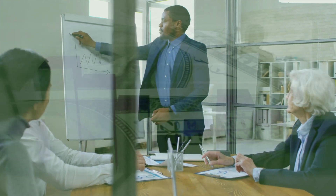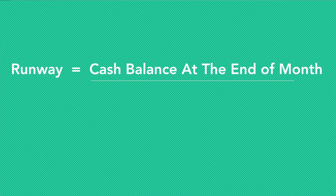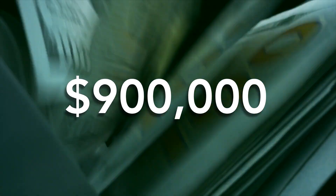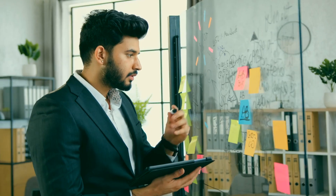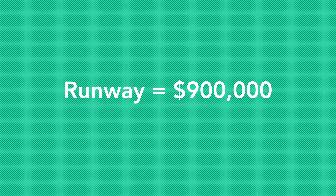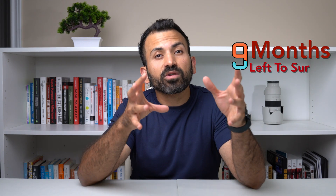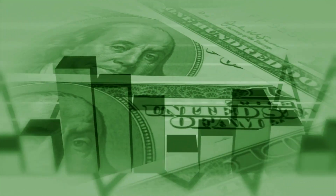Your runway is a calculation that tells you how many months your startup will survive until it needs another cash injection. Basically, if your runway is six months, that means your startup has six months before it will have to raise money from investors or take on debt. To calculate runway, take your cash balance at the end of the month and divide it by your burn rate. Using our example: $900,000 divided by a $100,000 burn rate gives you nine months of runway.